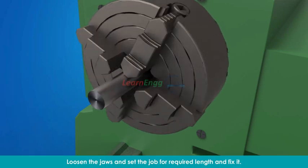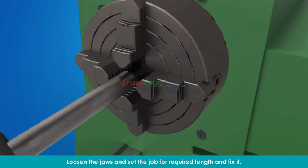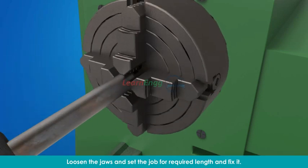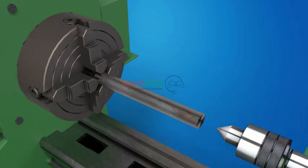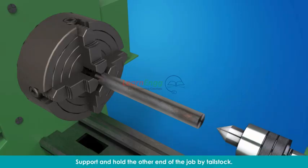Loosen the jaws and set the job for required length and fix it. Support and hold the other end of the job by tailstock.